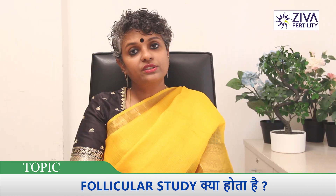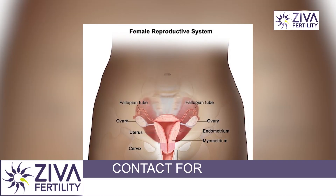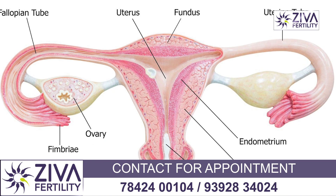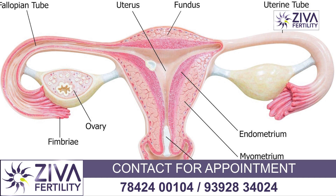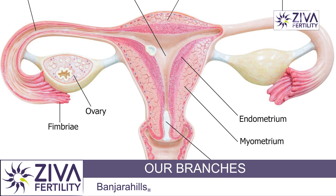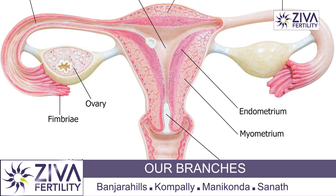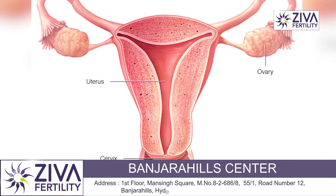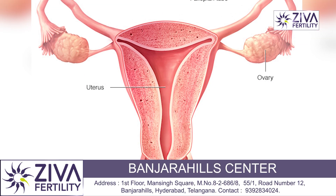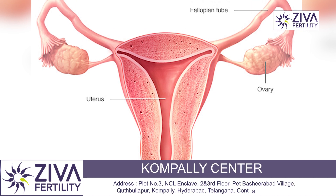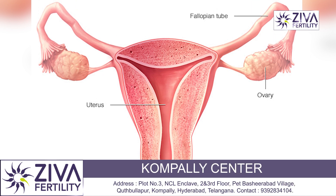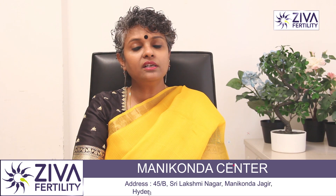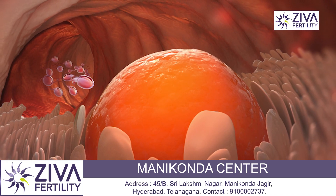For the follicles, we need to understand the reproductive organs. Both of the uterus are tubes — they are called fallopian tubes. They are connected and they are open on the ovary. There are two ovaries, one on the left side and one on the right side.